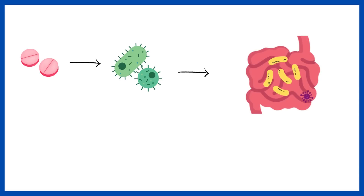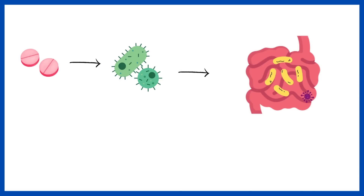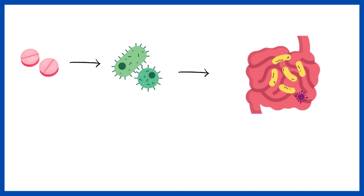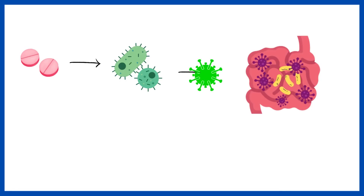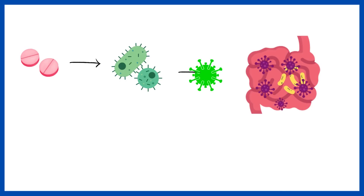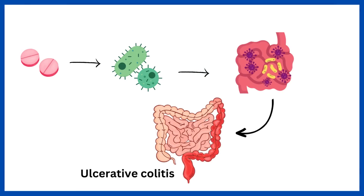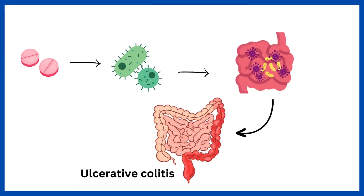When a person takes antibiotics, it can disrupt the normal balance of bacteria in the gut, allowing opportunistic pathogens like Clostridium difficile to overgrow and cause infection. This overgrowth can lead to severe colitis, characterized by inflammation of the colon.